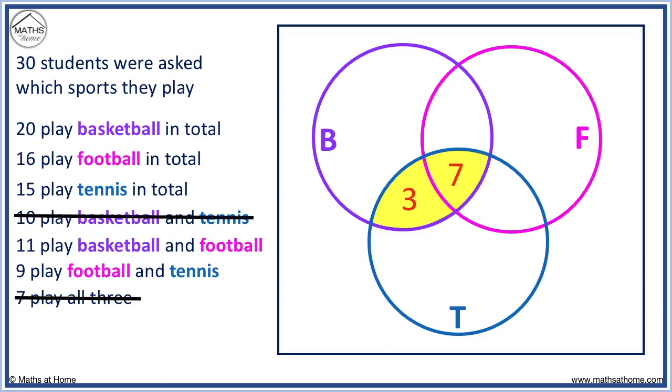We cross this line off. Now 11 people play basketball and football. This overlap is here. We need 11 people in this region and we already have 7. We need 4 more here. We cross off this information.